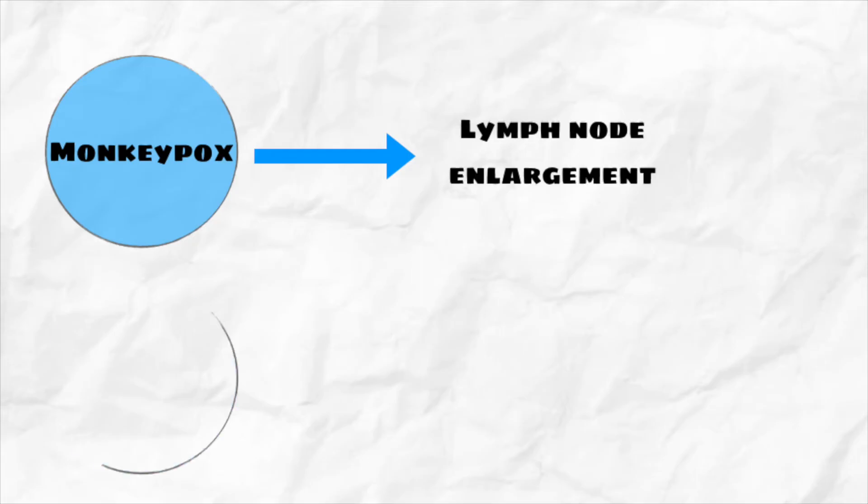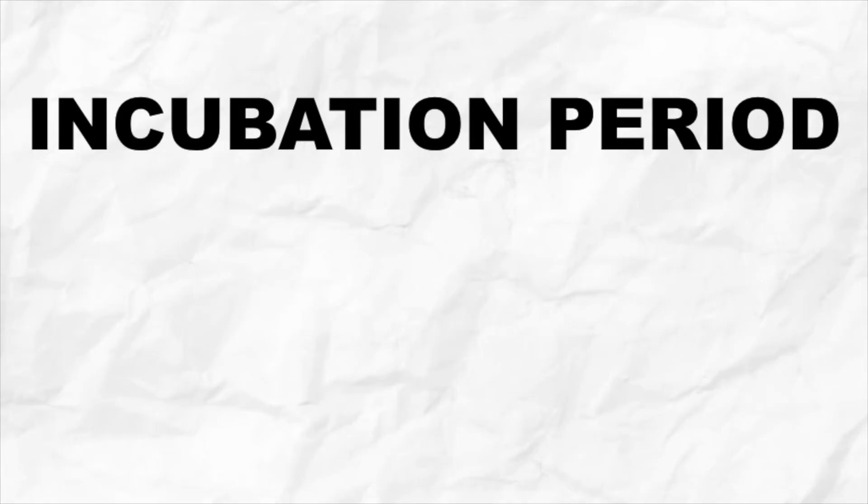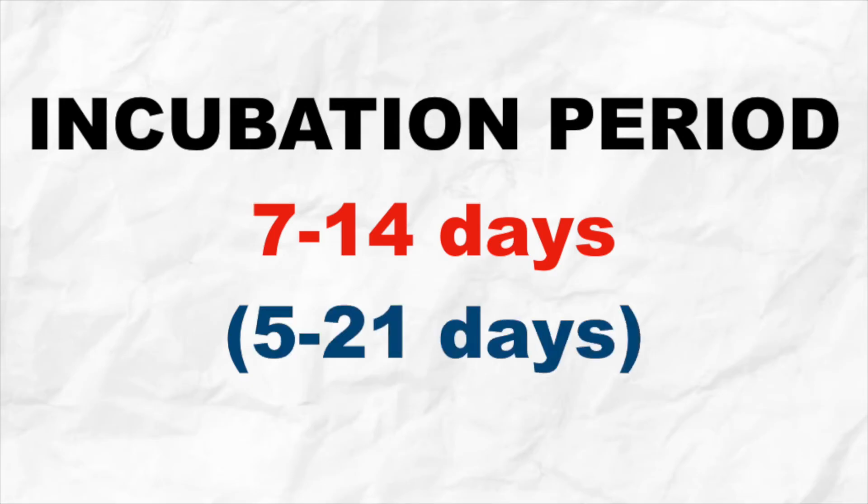The main difference between symptoms of smallpox and monkeypox is that monkeypox causes lymph nodes to swell, which is lymphadenopathy. In comparison, smallpox does not cause lymphadenopathy. The incubation period for monkeypox is usually 7 to 14 days but can range from 5 to 21 days.